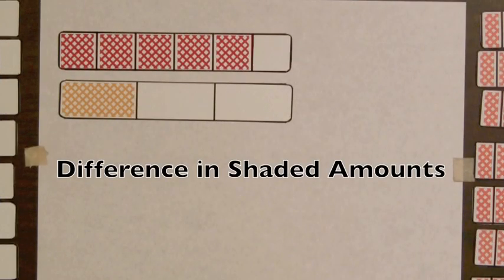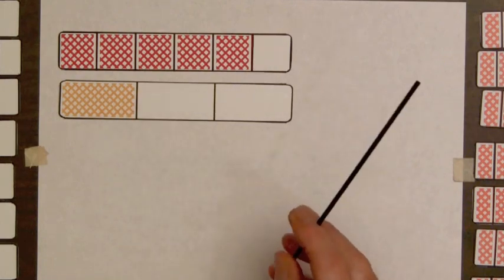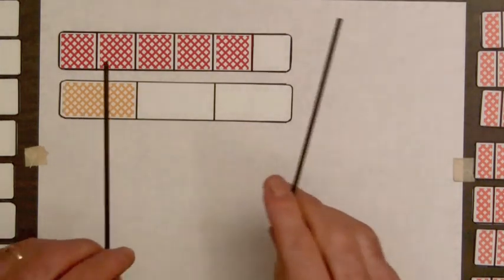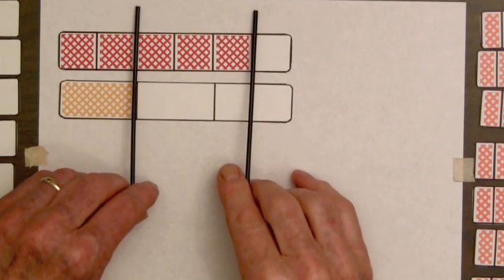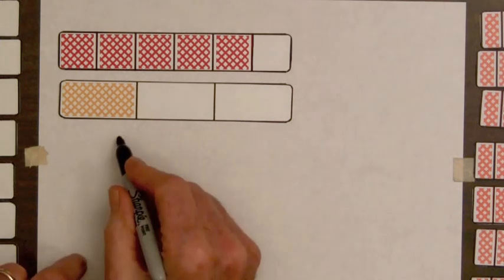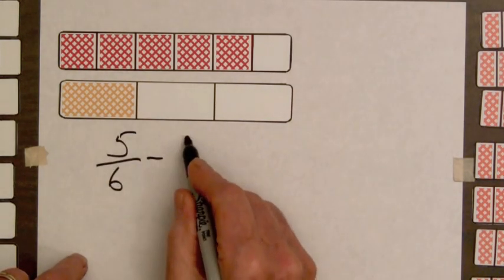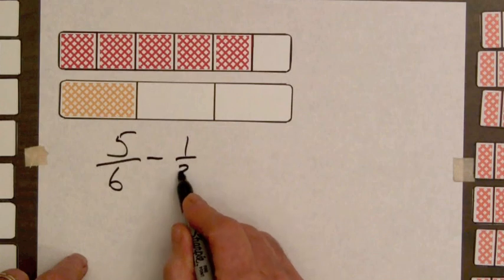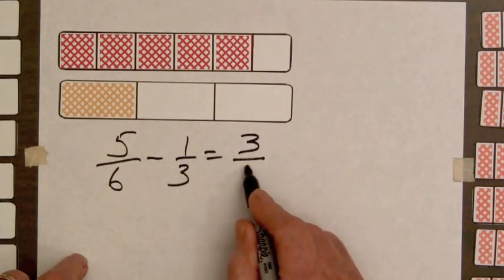Let's find the difference in shaded amounts for the five-sixths bar and the one-third bar. We can lay straws across here and see that the difference is three parts out of six. Five-sixths minus one-third equals three-sixths.